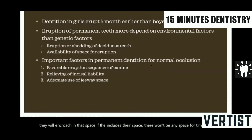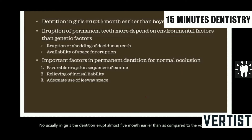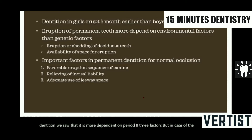Usually, in girls, the dentition erupts almost 5 months earlier than compared to boys. As we saw, eruption pattern is dependent upon various factors. In case of the deciduous dentition, it is more dependent on hereditary factors, but in case of the permanent teeth, the eruption pattern is more dependent upon environmental factors.